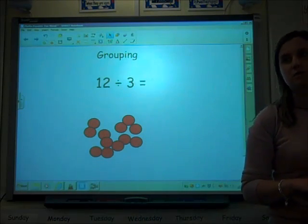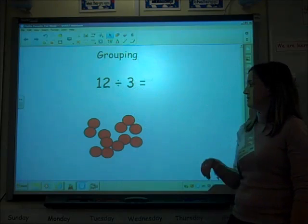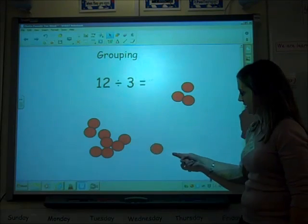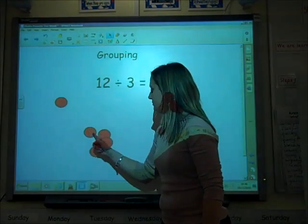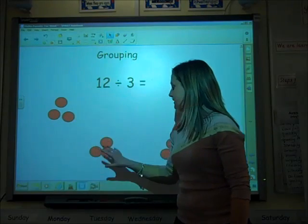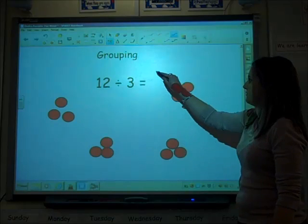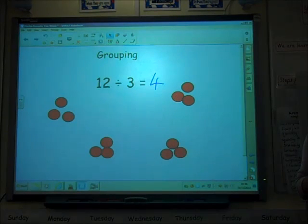We talk about grouping as well. Grouping is different. Grouping, if I'm doing 12 divided by three, grouping means I've got groups of three. I've got a three there, I've got three there, and I've got three there. How many groups have I got? I've got four groups.